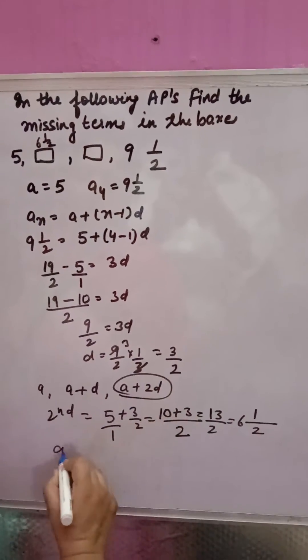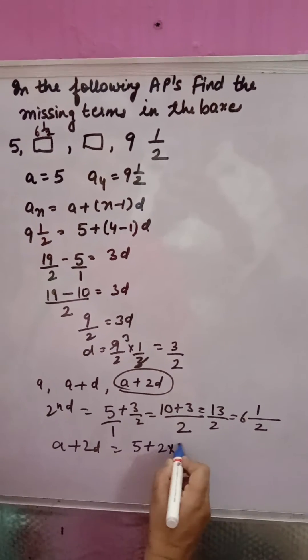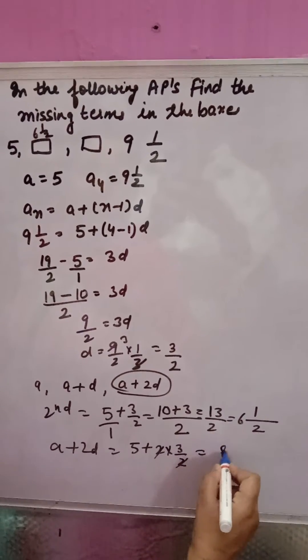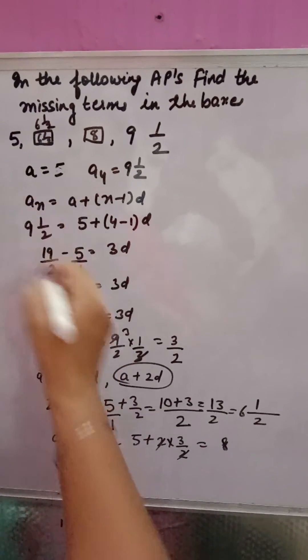Third term will be a + 2d. That means 5 plus 2 into 3 by 2. d is 3 by 2. 5 plus 3 is 8. So this term will be 8. This term will be 6½.